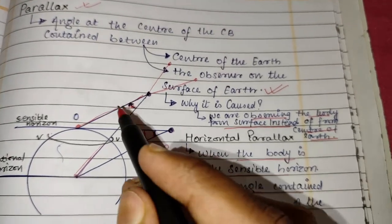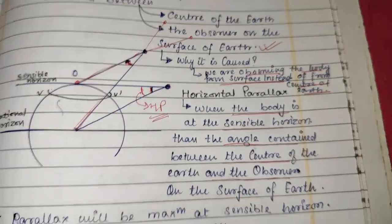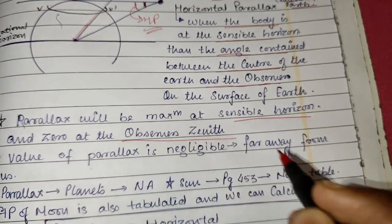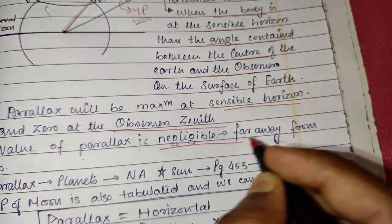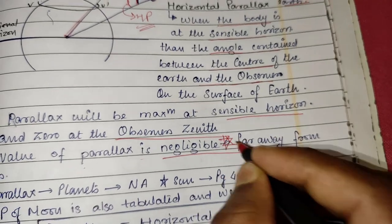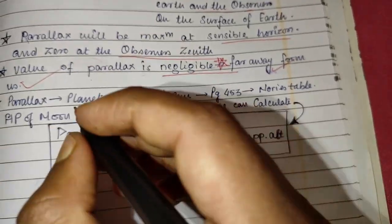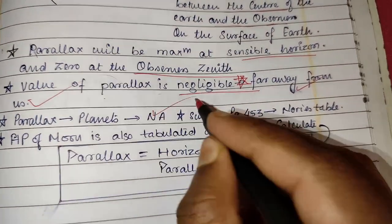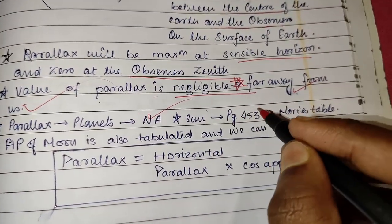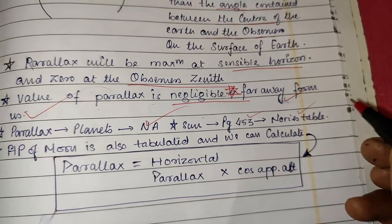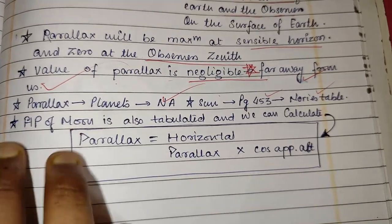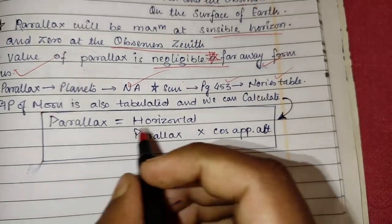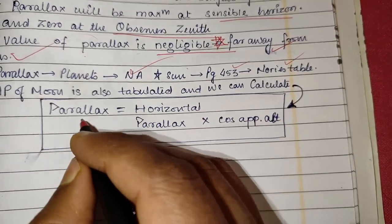Parallax will be maximum at the sensible horizon and it is zero at the observer's zenith. The value of parallax is negligible for stars because they are very far away from us. The value of parallax for planets is given in the nautical almanac, for the sun it is given on page 453 of Nuri's nautical table, and the horizontal parallax of the moon is also tabulated and can be calculated using this formula.